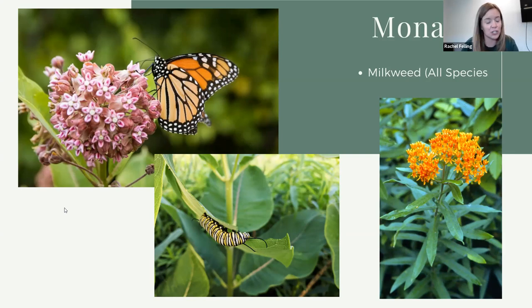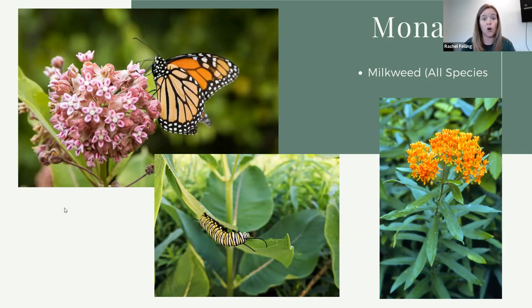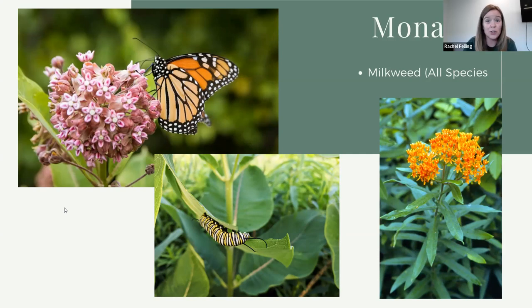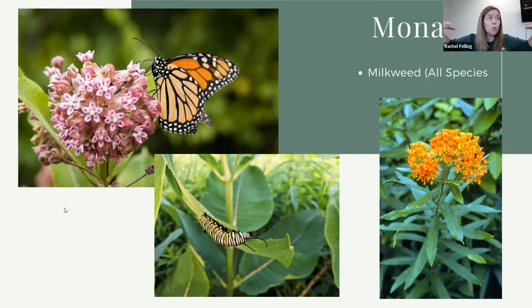For milkweed, just briefly: common milkweed is becoming more readily available even at big box style stores. It can grow very, very tall — like four or five feet tall. It has big, broad leaves and needs good, full sunlight. If it's got sunlight, you can grow it in just about anywhere, even in pretty degraded soils — that's why you see it on roadsides and the edges of farm fields. It's also a great nectar plant for lots of things: butterflies, bees, moths, all sorts of things buzzing around it.